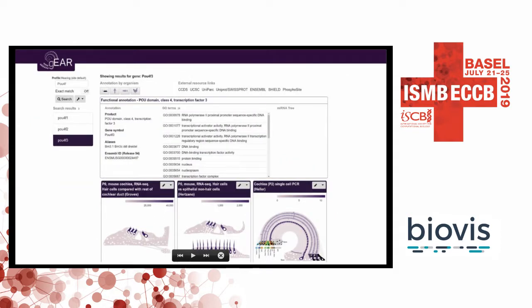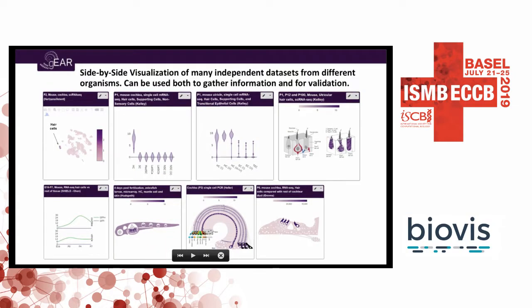The overall interface looks like this on the web. When you search for one or more genes, you get a list of matching candidates. If you click one, you have annotation across common organisms, functional annotation details, GO-term links, external resource links, and as many datasets as you want to configure to view at the same time. That side-by-side visualization is extremely useful, and to our knowledge we're the only tool that allows you to do this.